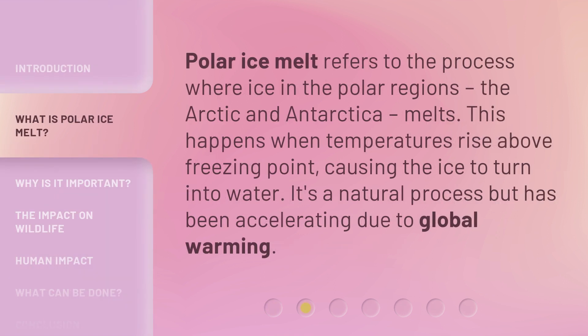Polar ice melt refers to the process where ice in the polar regions — the Arctic and Antarctica — melts. This happens when temperatures rise above freezing point, causing the ice to turn into water. It's a natural process but has been accelerating due to global warming.